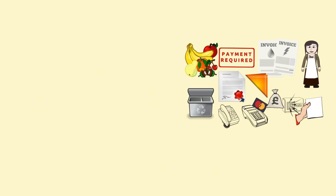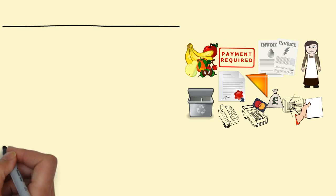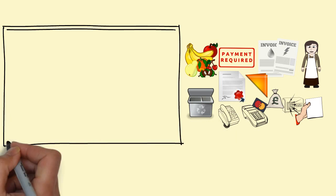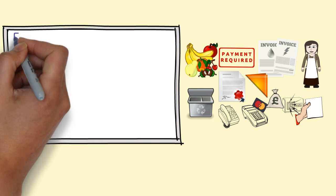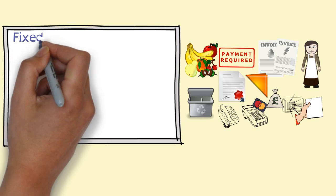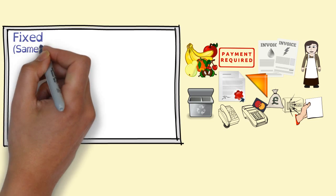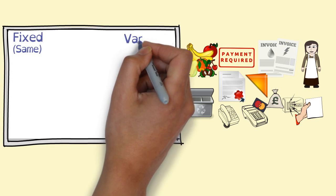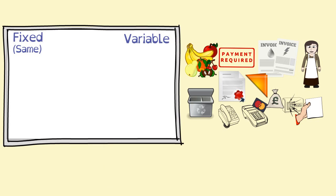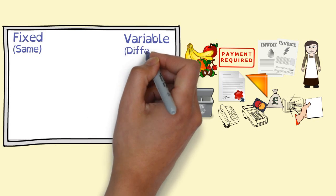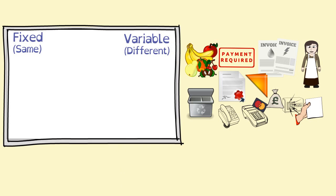In the cost video, the scenario of setting up your own smoothie bar was shown, and it identified these monthly running costs. Some of these costs will be the same amount every time you pay for them - a fixed cost. For some costs, it will be different every time you pay for them - a variable cost. This is all dependent on the level of output, and by this I mean how many smoothies you sell.